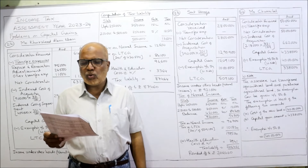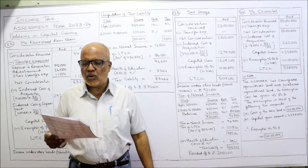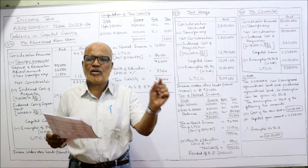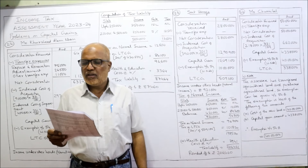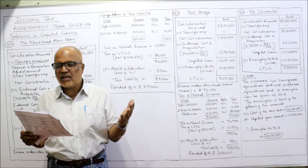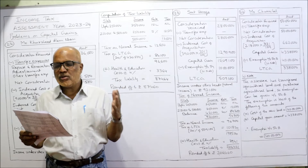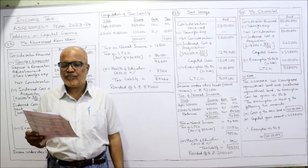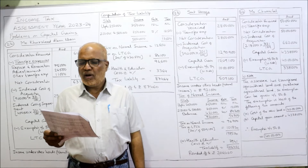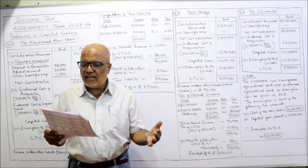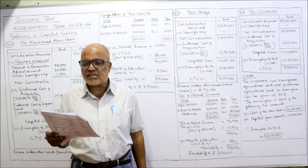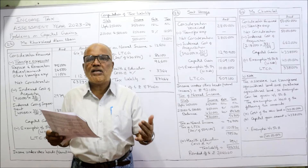Now problem number 23. Srimati Vanaja sold her residential house for Rs. 28,00,000 — this is the consideration received. The cost of the house 16 years ago was Rs. 3,90,000, and the cost inflation index is 100.